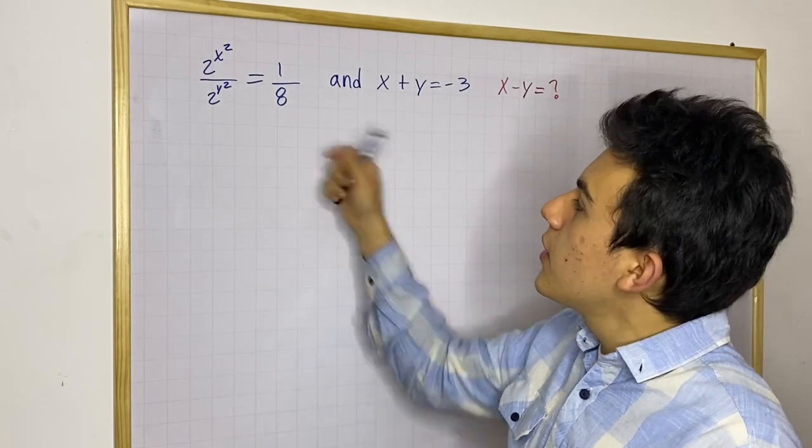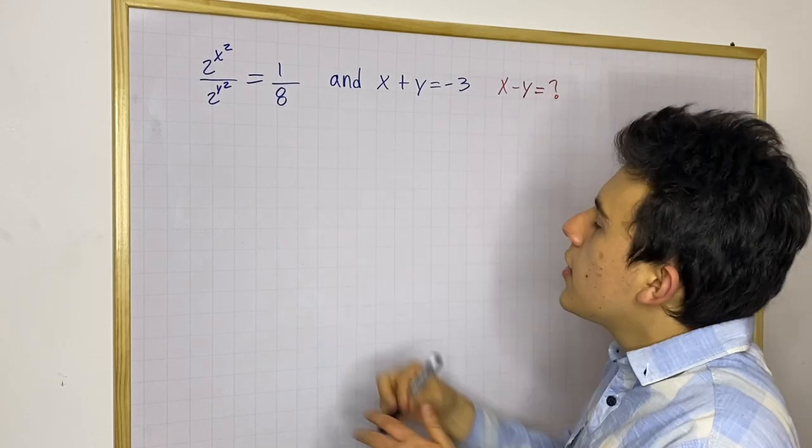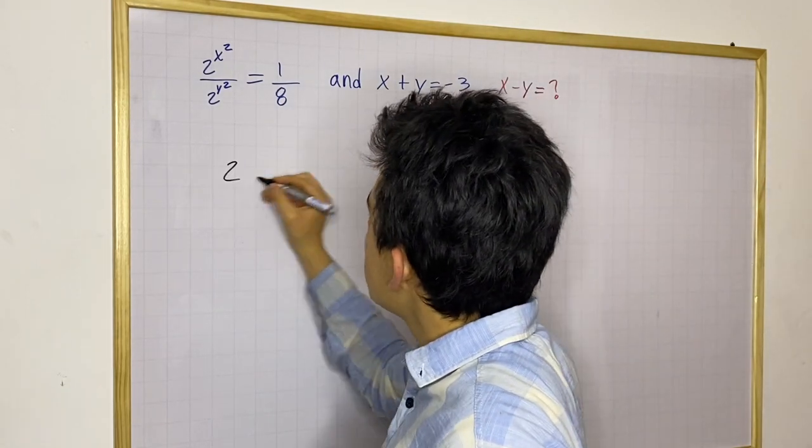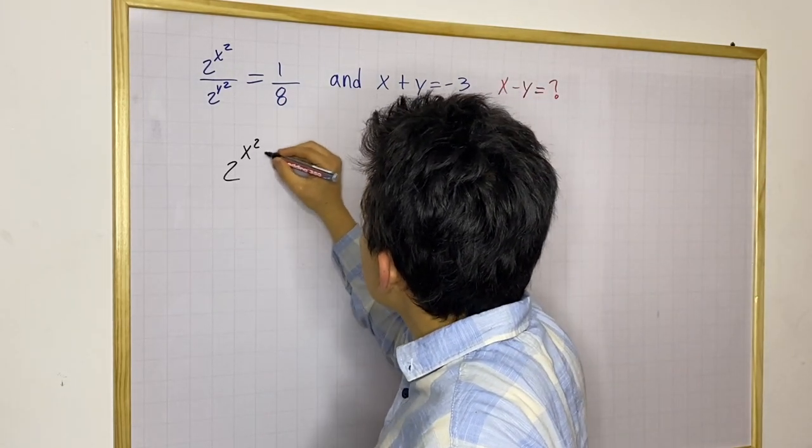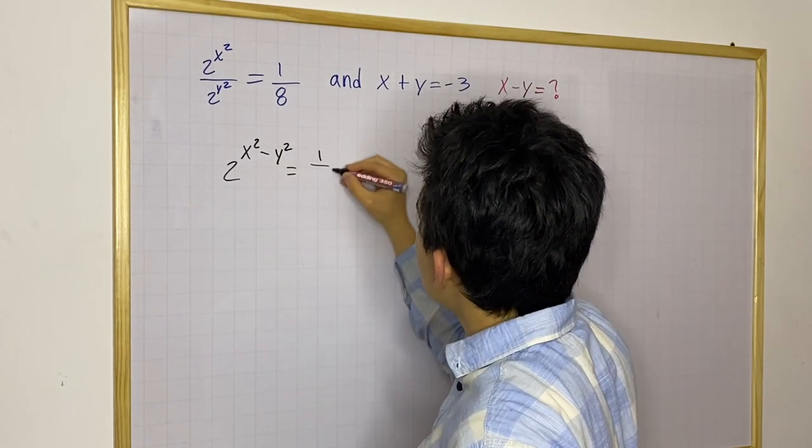How do you solve this problem? Well, you can see in this fraction that you have the same base in the top and in the bottom. So that means that you can rewrite this as x squared minus y squared, with the base of 2, and we know this is 1 over 8.